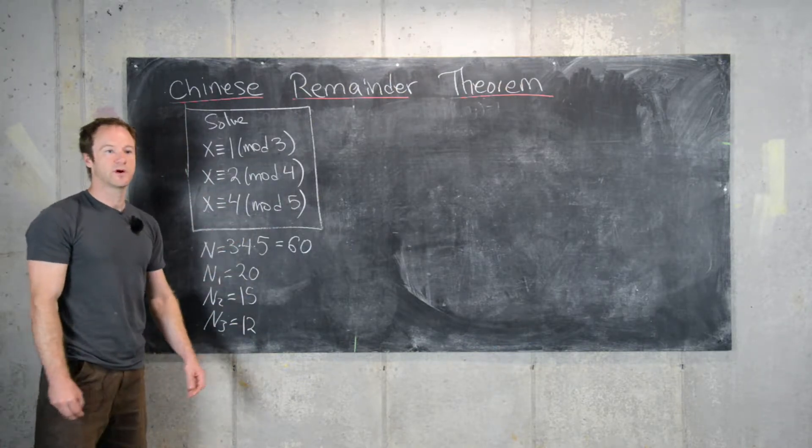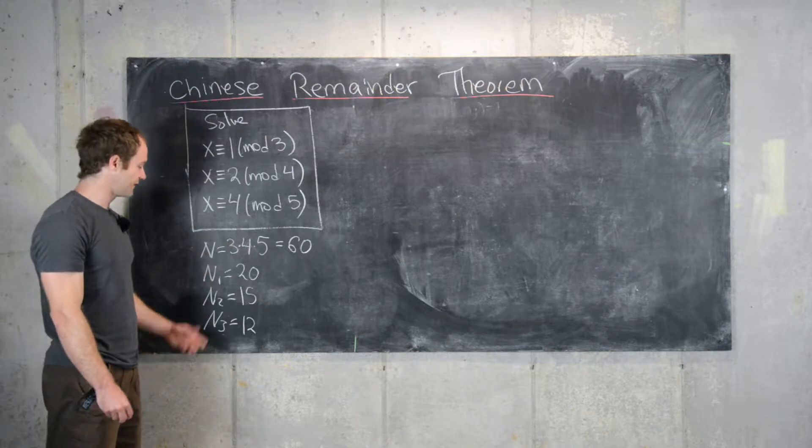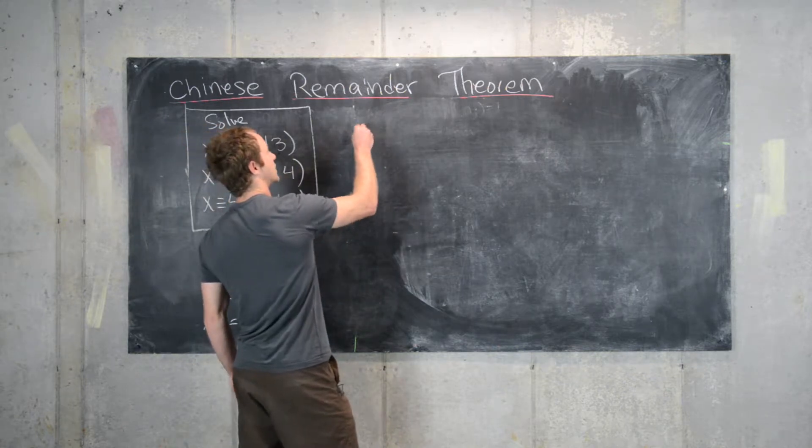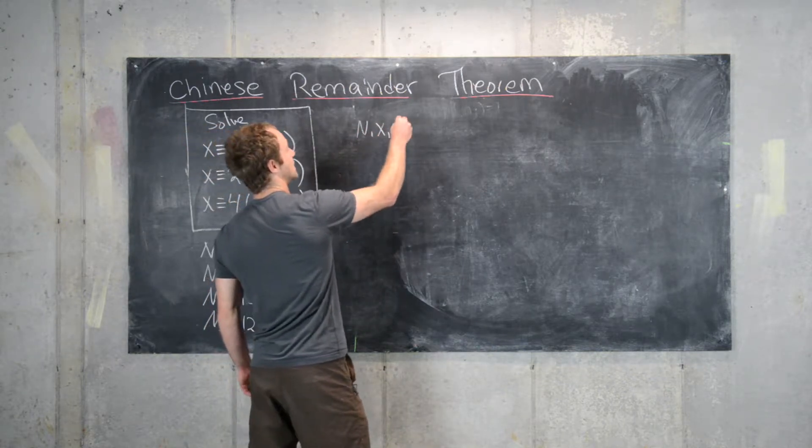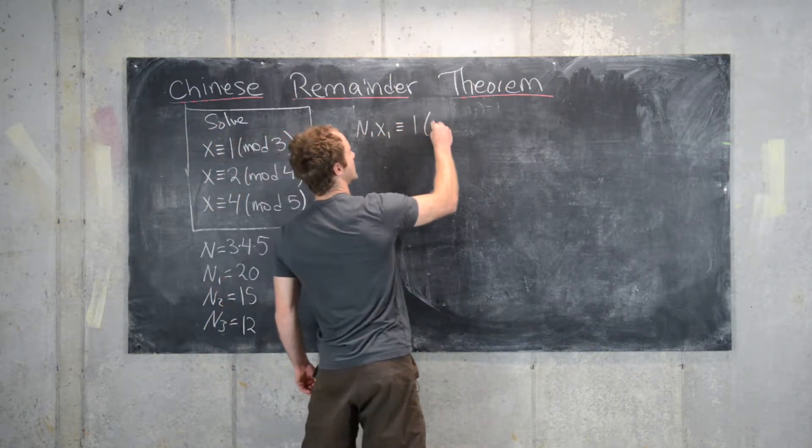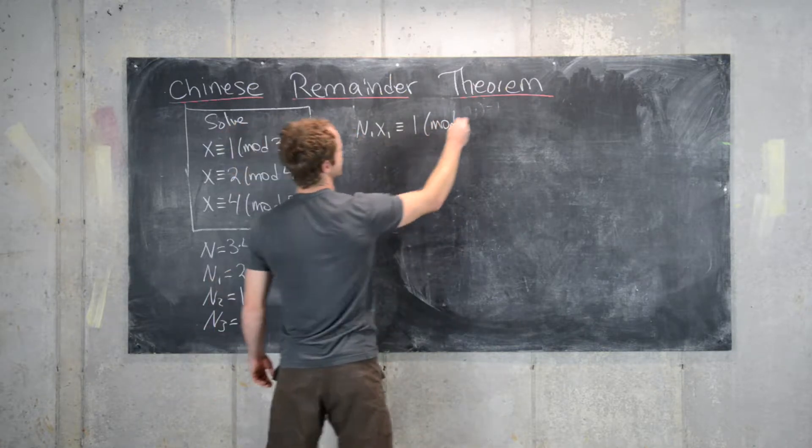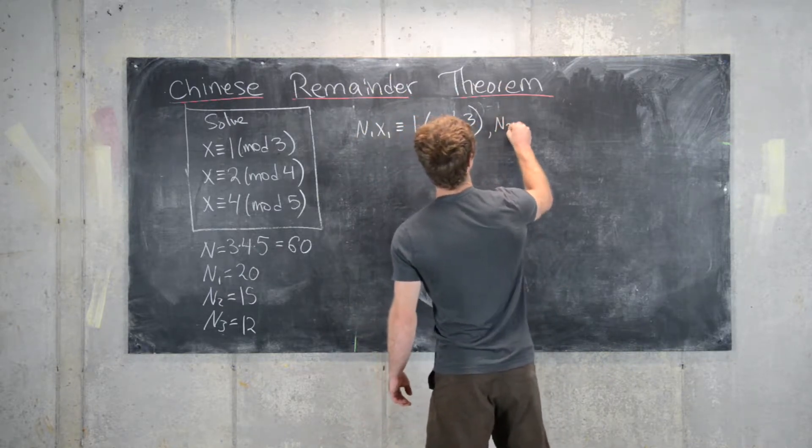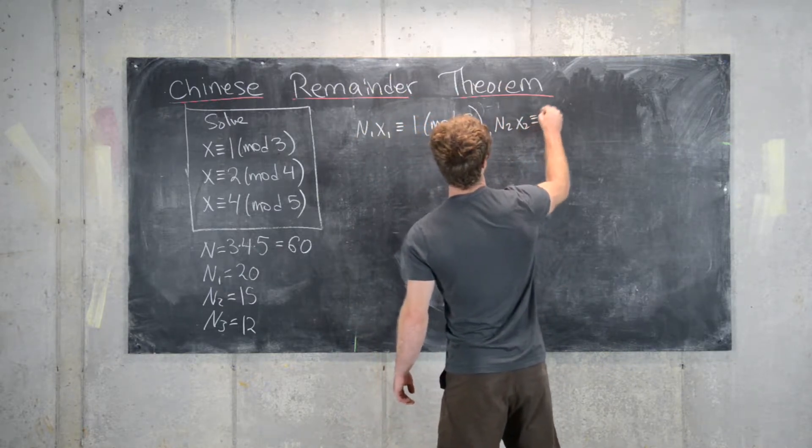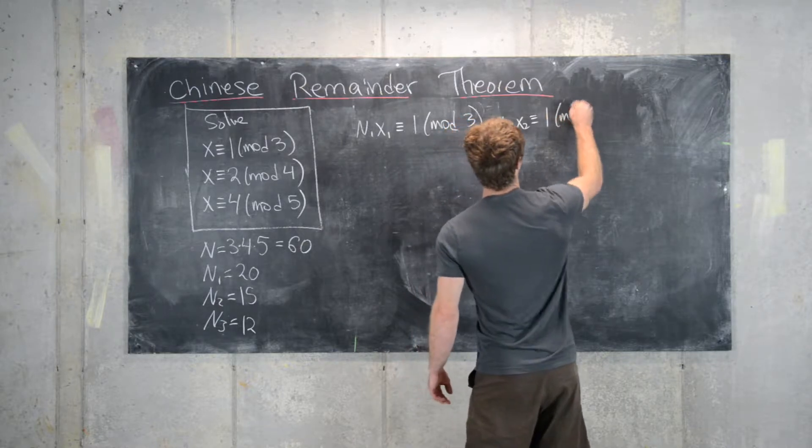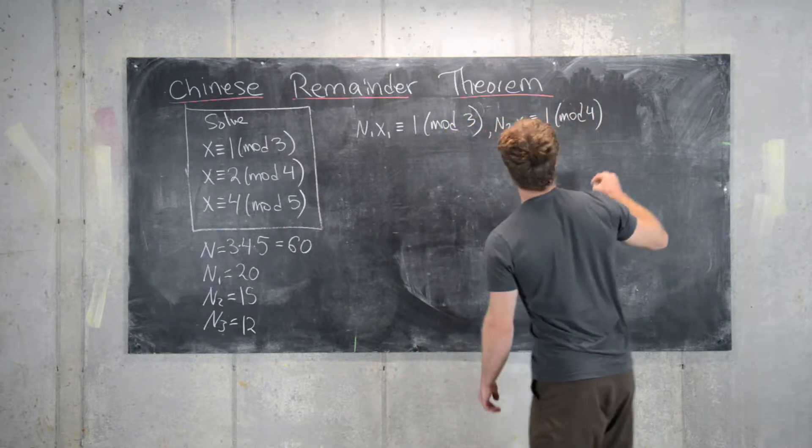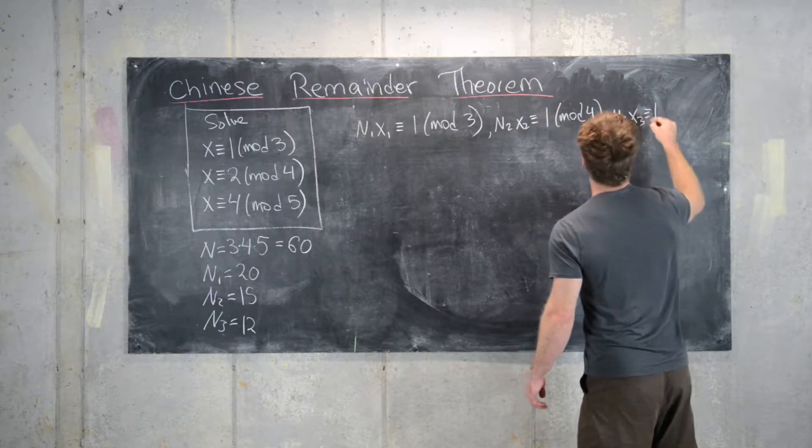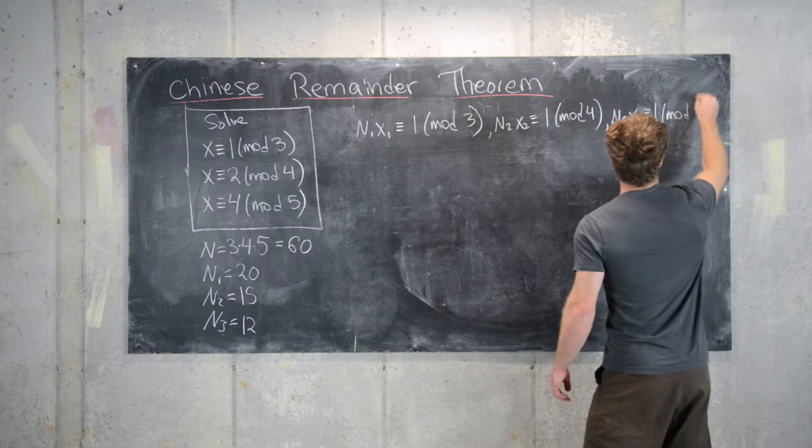Using the constructive method from the proof, we need to find the inverses of these. So what we want to do now is solve n1x1 congruent to 1 mod little n1, which is 3. We want to solve n2x2 is congruent to 1 mod little n2, which is 4. And finally, we want to solve n3x3 is congruent to 1 mod 5.